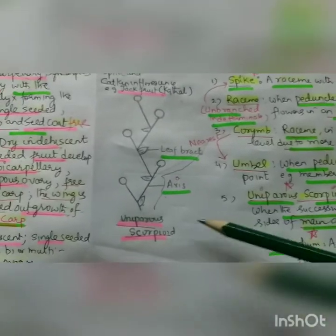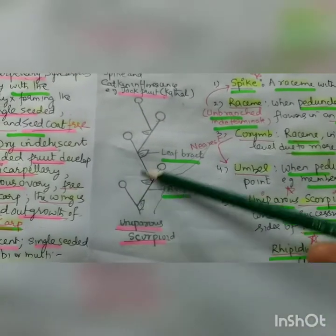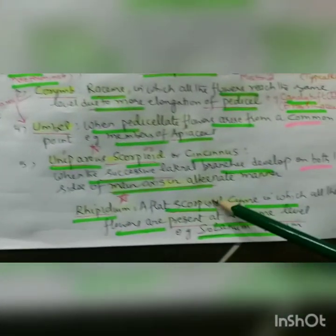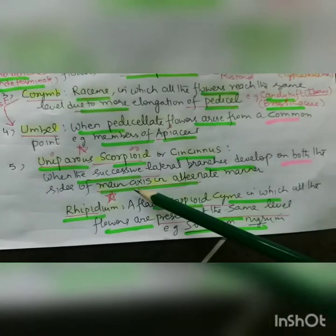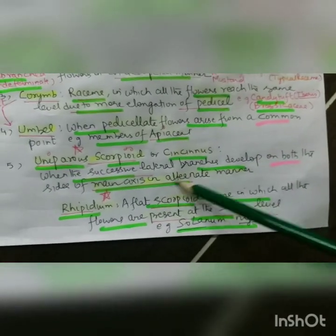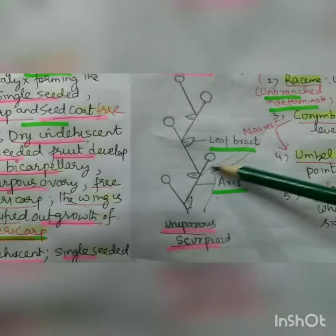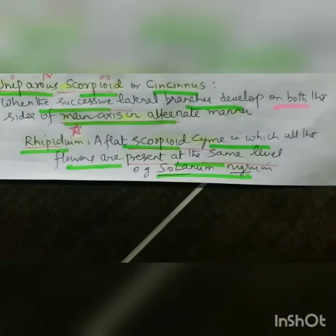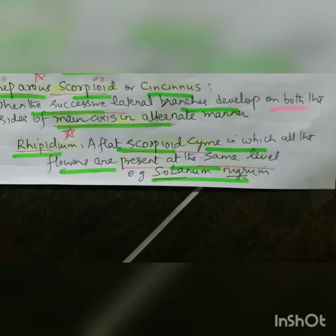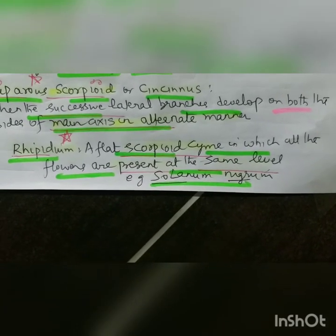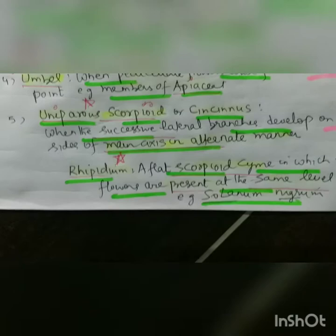Yesterday I also covered the scorpioid cyme. The scorpioid is on one side and helicoid is on both sides. In uniparous scorpioid, successive lateral branches develop on alternating sides of the main axis. Please refer to the Solanaceae family - rhipidium - which is a flat scorpioid cyme in which all the flowers are present at the same level, like a uniparous scorpioid but with flowers reaching the same level.